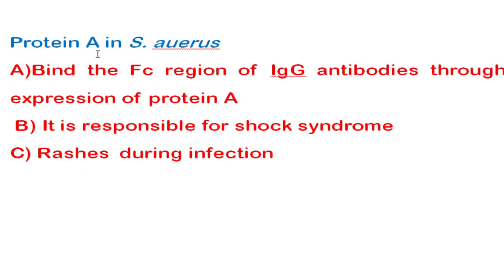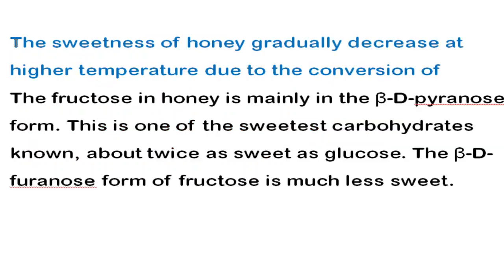The next question is about Protein A in Staphylococcus aureus. Staphylococcus aureus binds to the Fc region of IgG antibody through the expression of Protein A. That is the reason Protein A is employed in affinity chromatography.